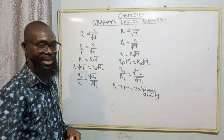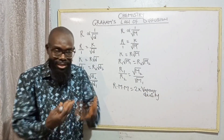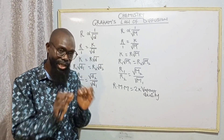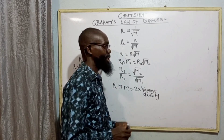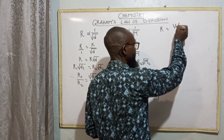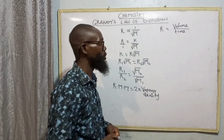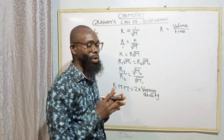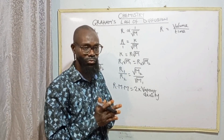The next aspect we will move on to is that rate of diffusion also depends on the time taken. That is, there will not be a diffusion rate without time. The word rate implies time. The rate of diffusion equals volume of gas divided by time taken for the gas to diffuse. So rate equals volume over time. We are going to consider two conditions: when the gases have the same volume and when they have different volumes. Assuming we have gas A and B.